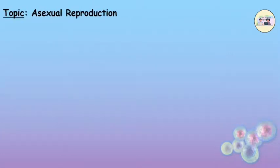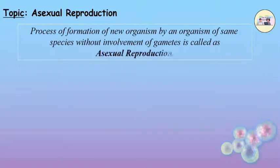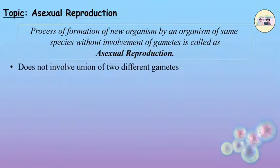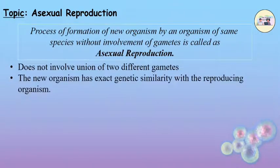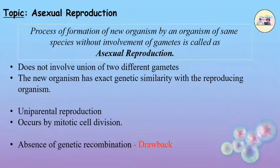Asexual Reproduction. The process of formation of new organisms by an organism of the same species without involvement of gametes is called asexual reproduction. This reproduction does not involve the union of two different gametes. The new organism has exact genetic similarity with the reproducing organism. This is uniparental reproduction and occurs by mitotic cell division. Absence of genetic recombination is a drawback, whereas fast process is the advantage of this reproductive method.